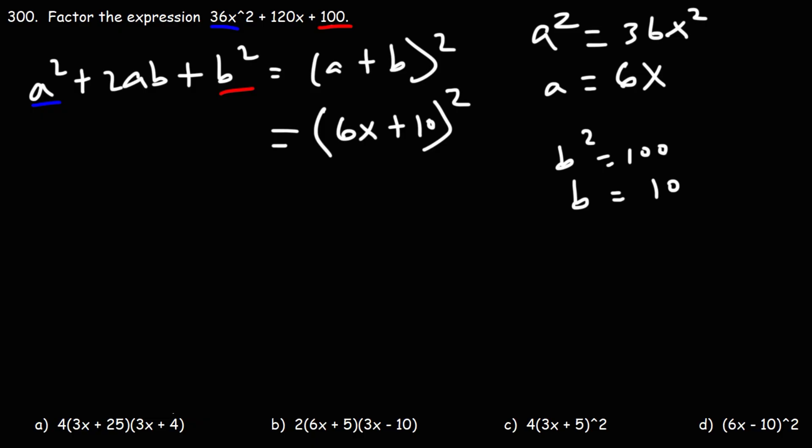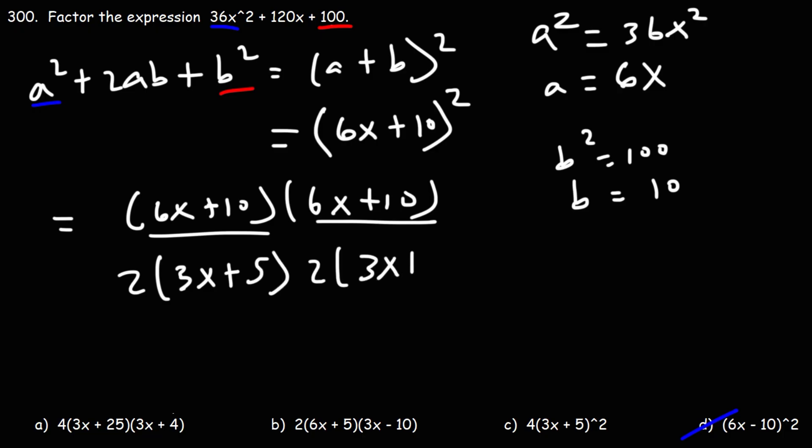Now, d looks very similar, but there's a minus sign instead of a plus, so it's not d. So what's the answer? Notice that we could factor a GCF from 6x plus 10. First, let's expand it: 6x plus 10 times 6x plus 10. We could take out a 2 from this term. 6x divided by 2 is 3x. 10 divided by 2 is 5, and we could take out a 2 from that. It would be 2 times 3x plus 5 as well.